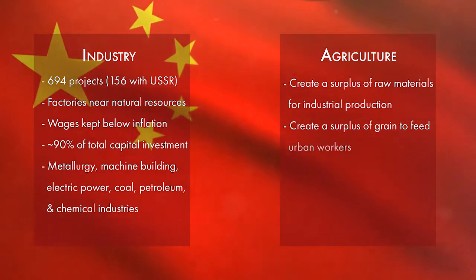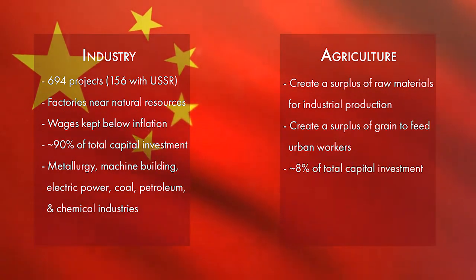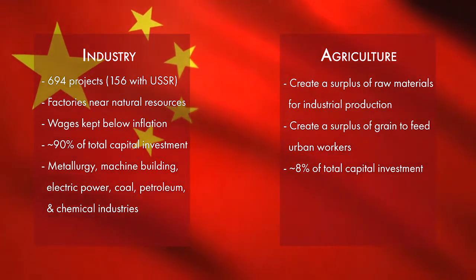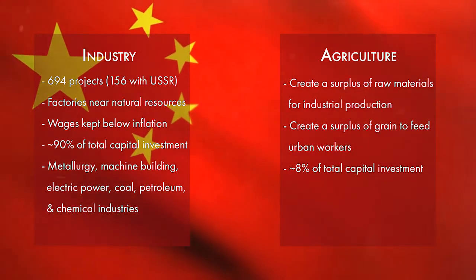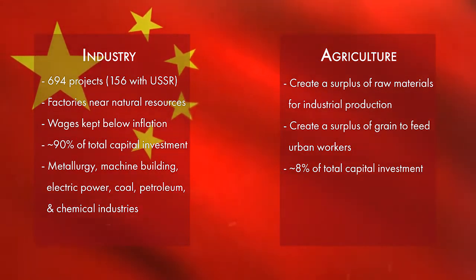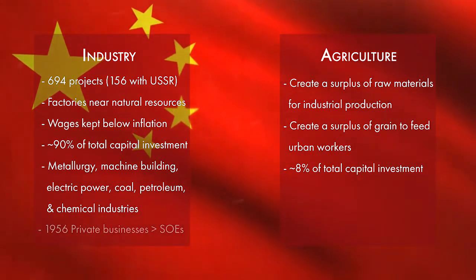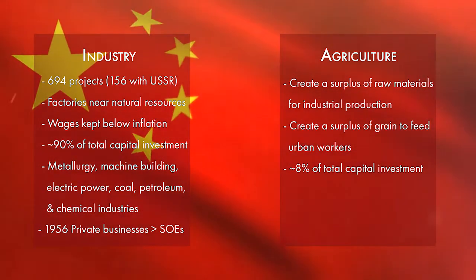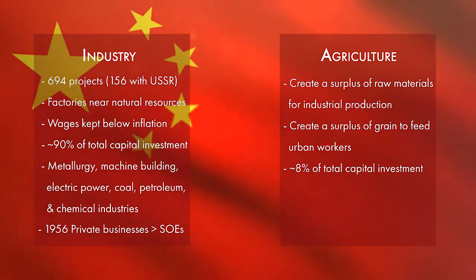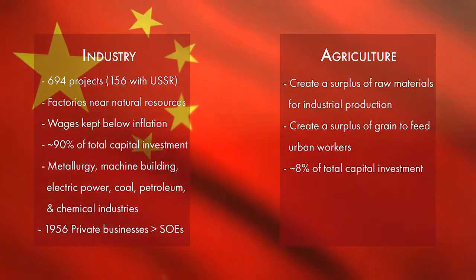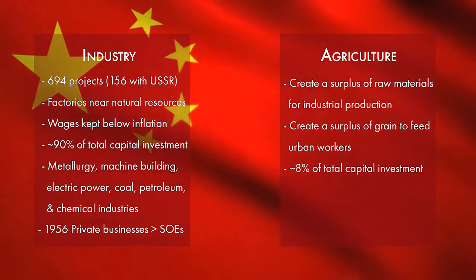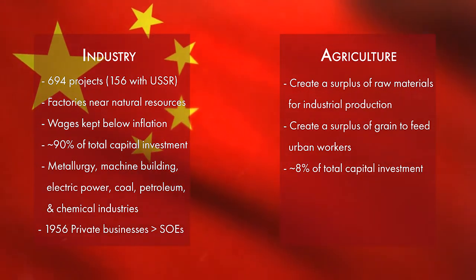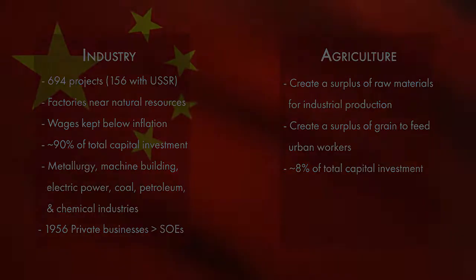The majority of general investment from the government was put into industry, with only 8% allocated to agriculture. The majority of industrial projects were large scale and capital intensive, with 90% of all investment being put into metallurgy, machine building, electronic power, coal, petroleum and chemical industries. During this period, the process of socialisation of all industries was also completed. Most enterprises were allowed to continue operating as private businesses or joint state-owned enterprises until the mid-1950s, but by 1956 the transformation of all private businesses into state-owned enterprises was completed in every industry, which allowed for greater control from a centralised planning perspective.